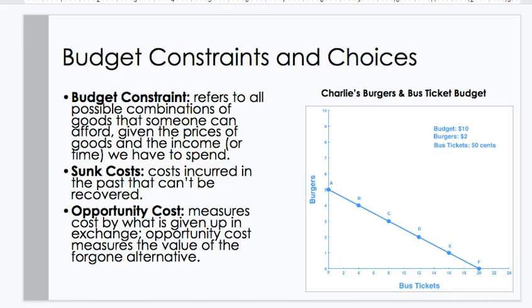Budget constraint refers to all possible combinations of goods that someone can afford, given the prices of goods and services, and the income or time we have to spend. Sunk costs are costs incurred in the past that can't be recovered.